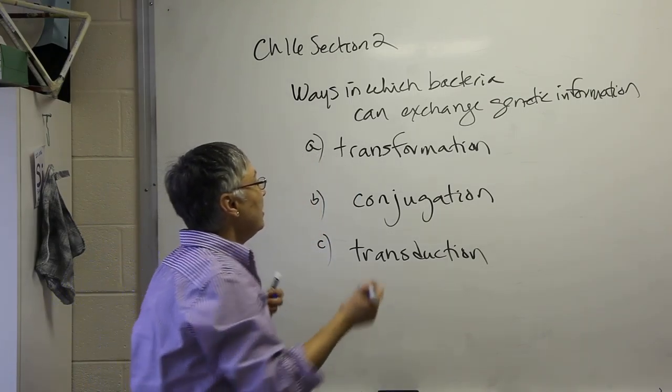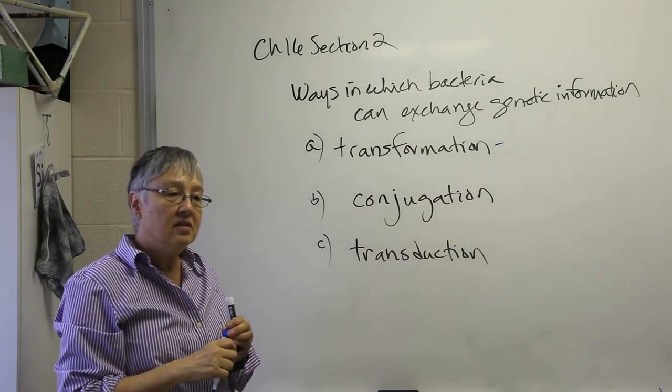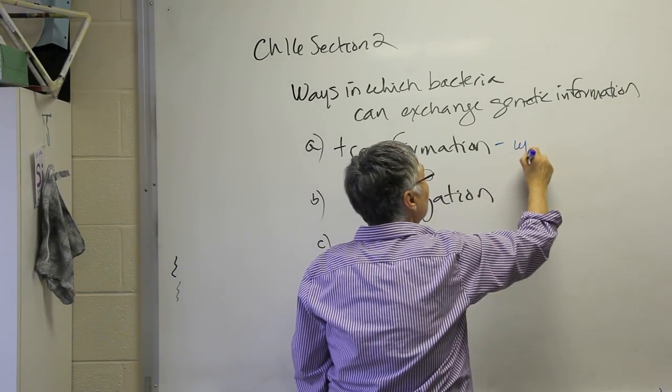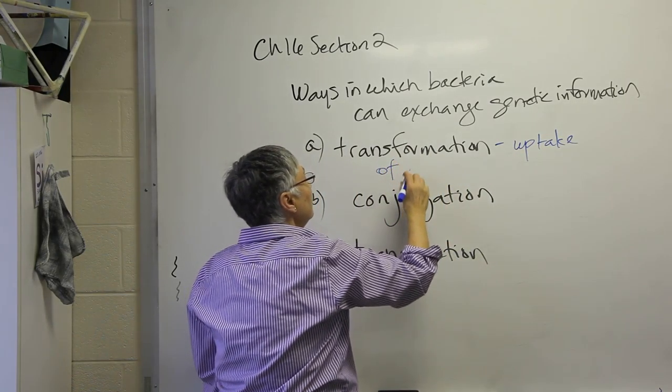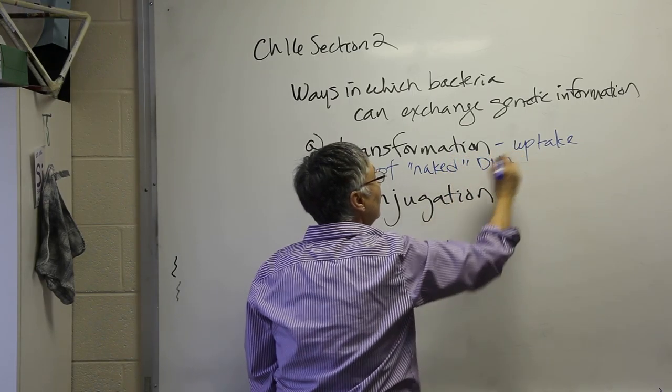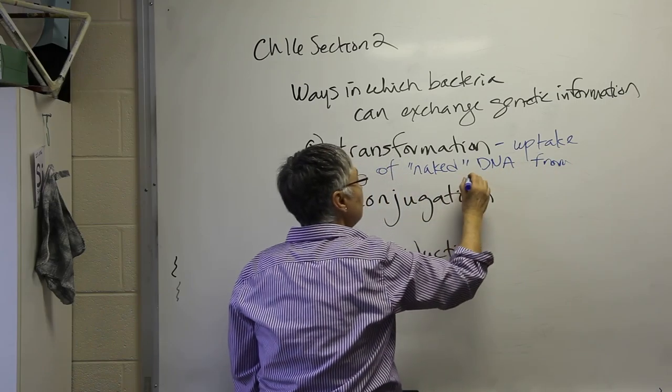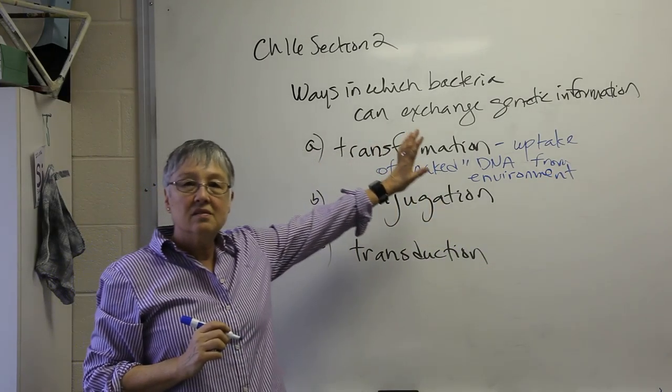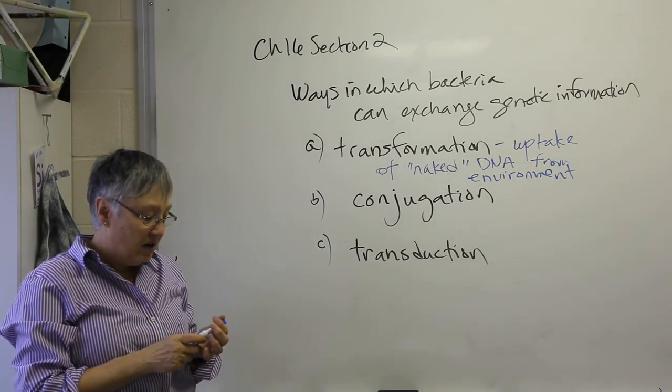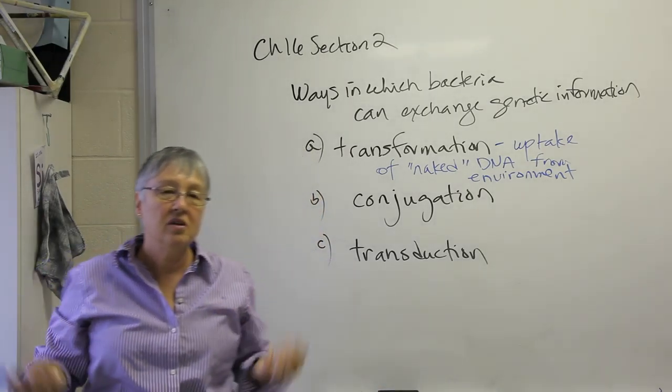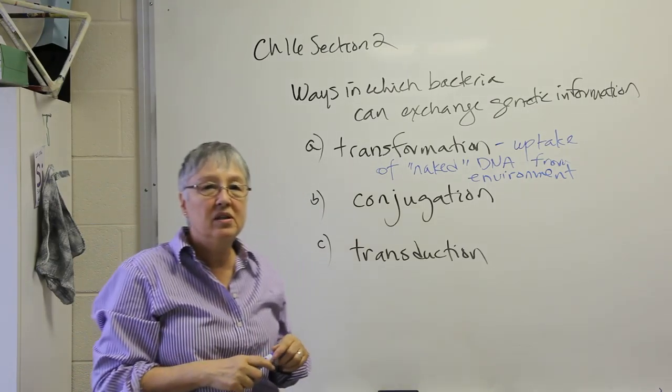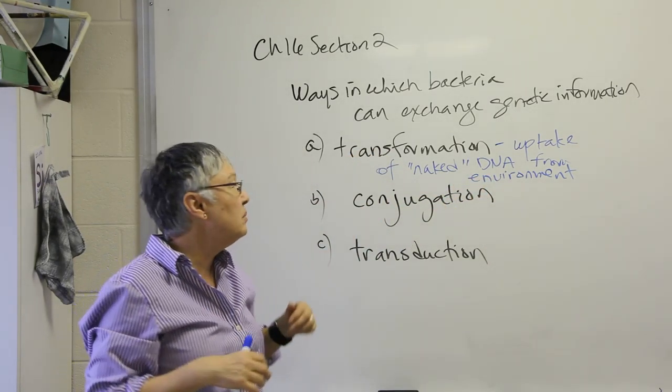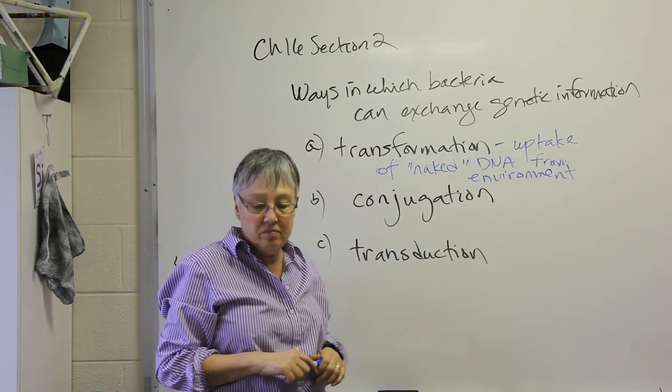Transformation we've talked about when we discussed how bacteria are used to clone genes from different species. Transformation refers to the uptake of, I'll call it naked DNA, from the environment. So this doesn't involve any special structures. But when cells die, the cell membranes rupture. So the DNA can be found in small pieces in the environment. Other cells in that area can take those small pieces of DNA up through the cell wall, through the cell membrane, and those genes can actually become part of the bacterial chromosome.